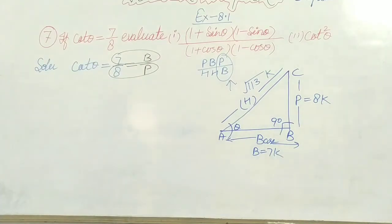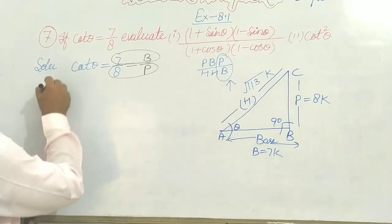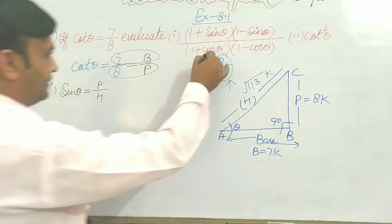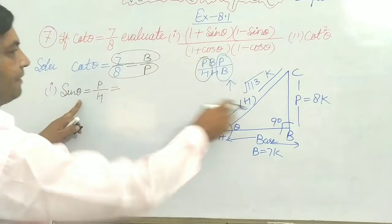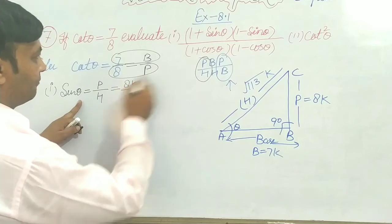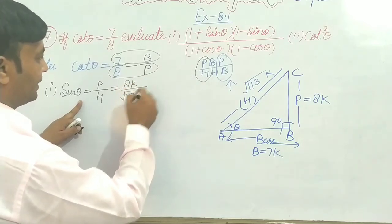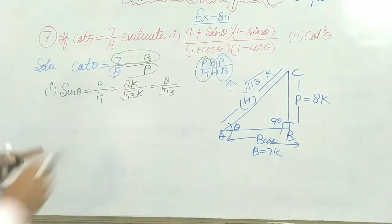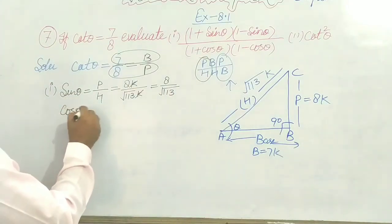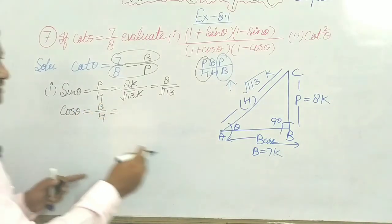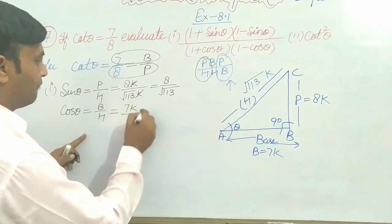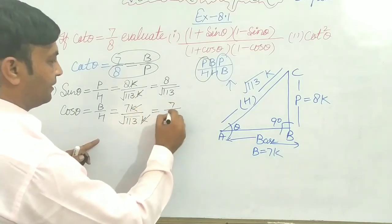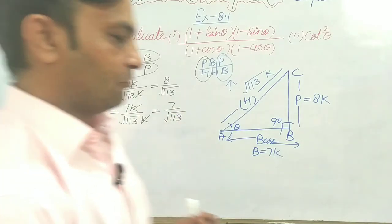For Part 1, sin θ equals perpendicular over hypotenuse, which gives us 8K over √113·K. The K's cancel, so sin θ equals 8 over √113. Next, cos θ equals base over hypotenuse: 7K over √113·K, so cos θ equals 7 over √113.